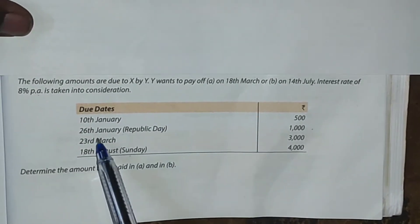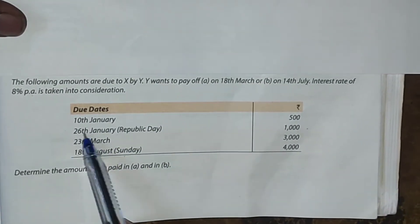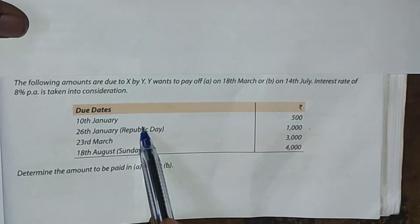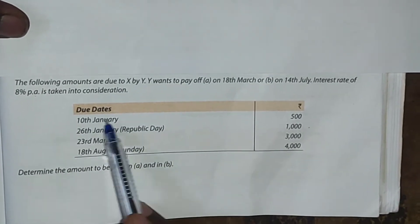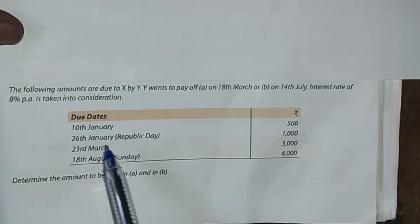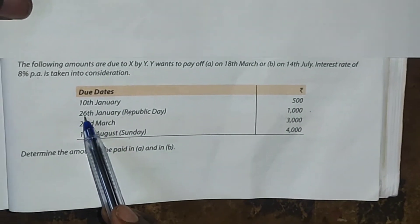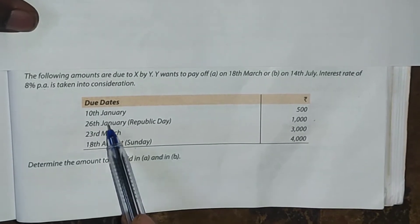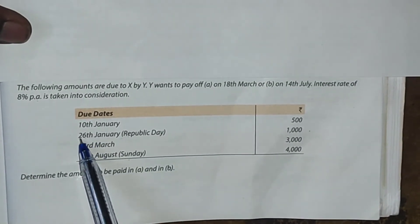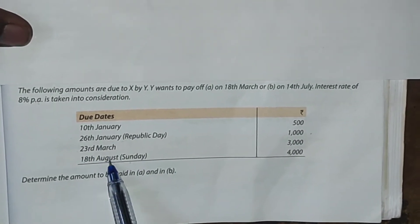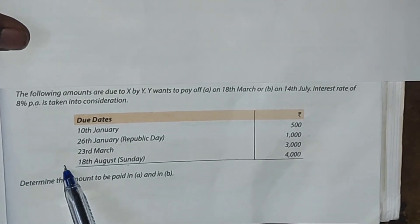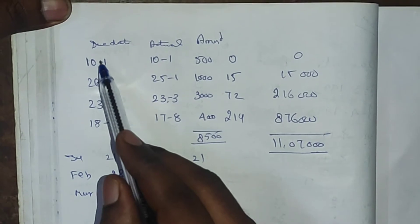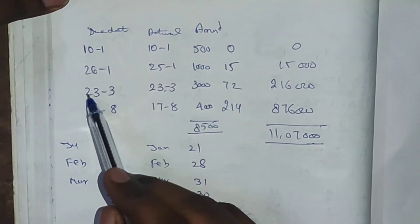In this problem, 26th January is Republic Day and 18th August is a Sunday, so gazetted holidays fall on the due dates. If a due date is a gazetted holiday, you have to take one day prior. So 26th January becomes 25th January, and 18th August becomes 17th August.